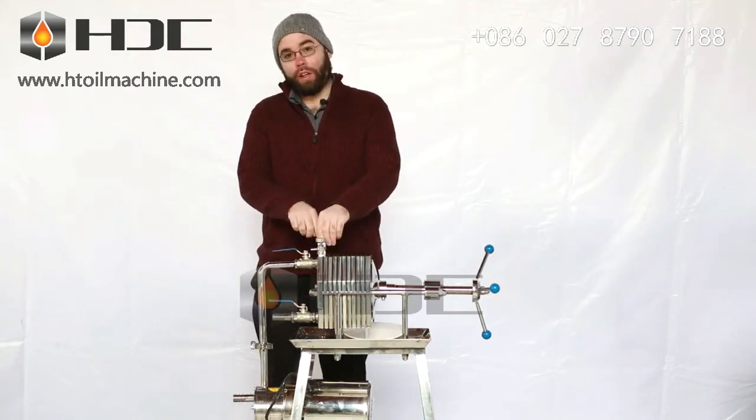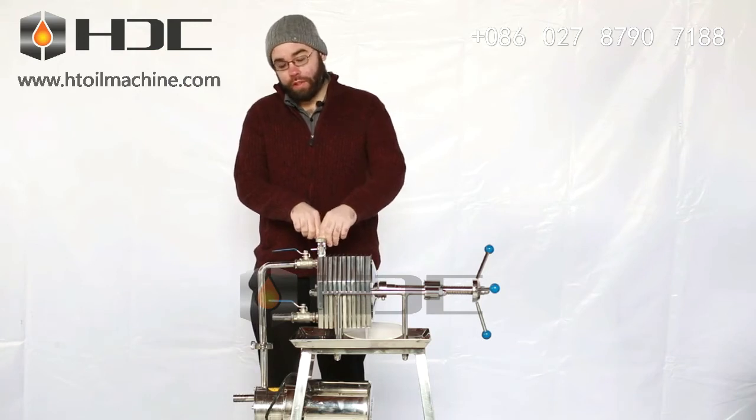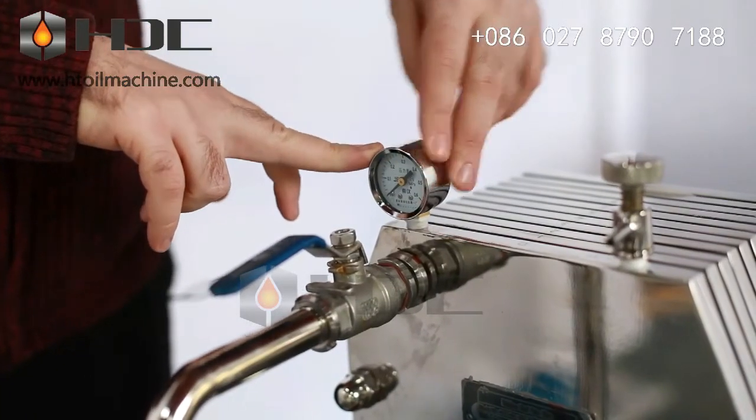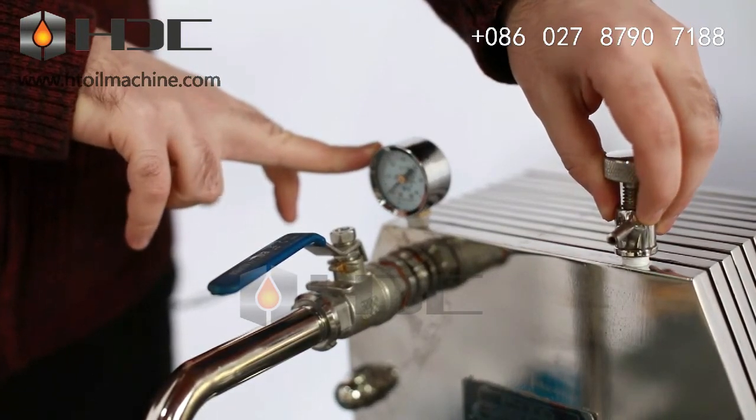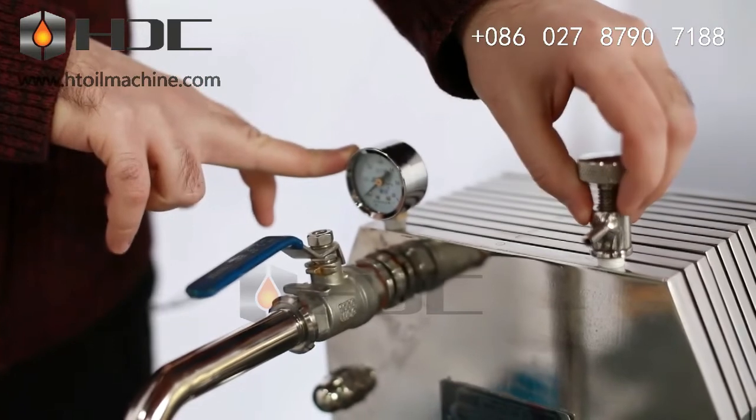This first dial here is our pressure valve, pressure gauge and this here is our safety valve. In case the pressure builds up too much, the pressure will release through this valve.